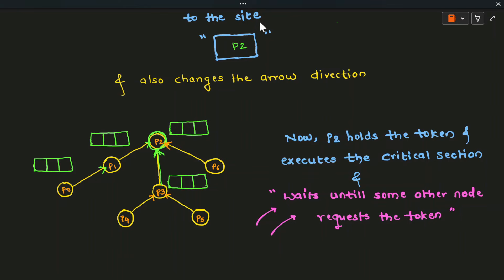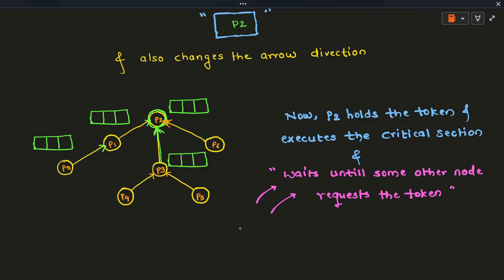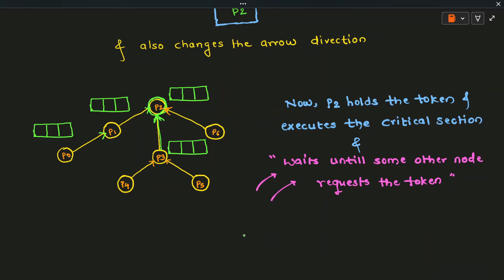P2 now holds the token and executes the critical section. Once its execution is complete, P2 checks its queue to decide which site to forward the token to, then surrenders the token and forwards it to the site at the front of the queue. This process repeats again and again as the token passes from one site to another. In summary, Raymond's algorithm is based on the mutual exclusion principle — it is a token-based algorithm where the site holding the token executes the critical section in a distributed environment.